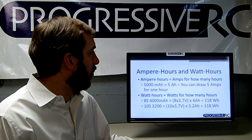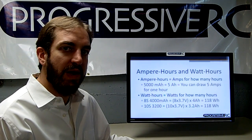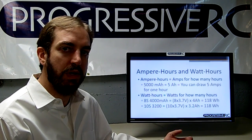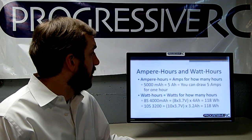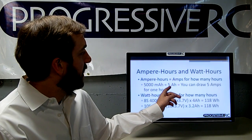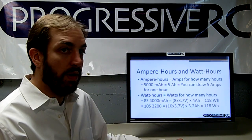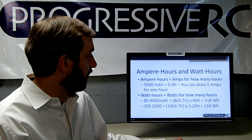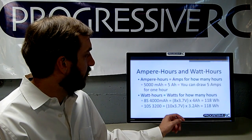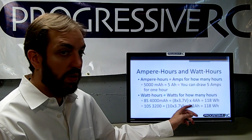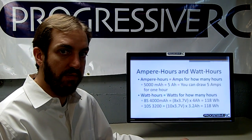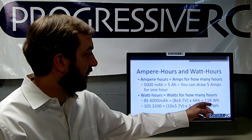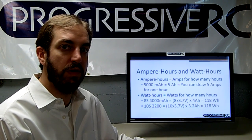This brings us to ampere hours and watt hours. Ampere hours provides a capacity measurement for a battery, while watt hours tells you the total amount of energy available. For example, a 5 ampere hour battery means you can draw 5 amps for 1 hour. On an 8S 4000 mAh LiPo, that's 8 times 3.7 volts per cell nominal to give you the total voltage — at 4 ampere hours you'll have 118 watt hours of energy available.